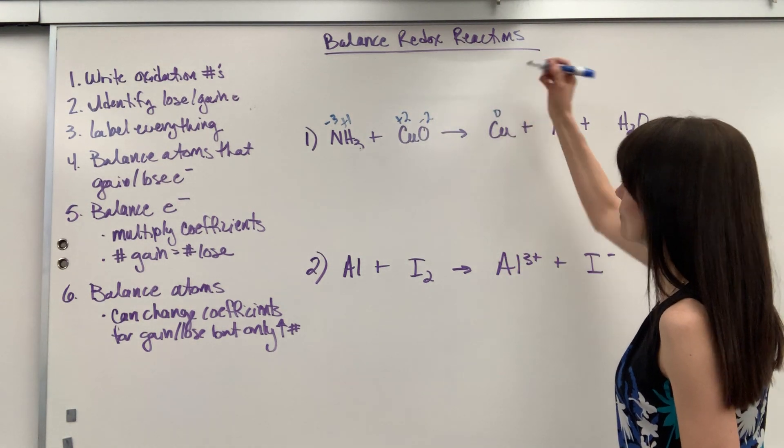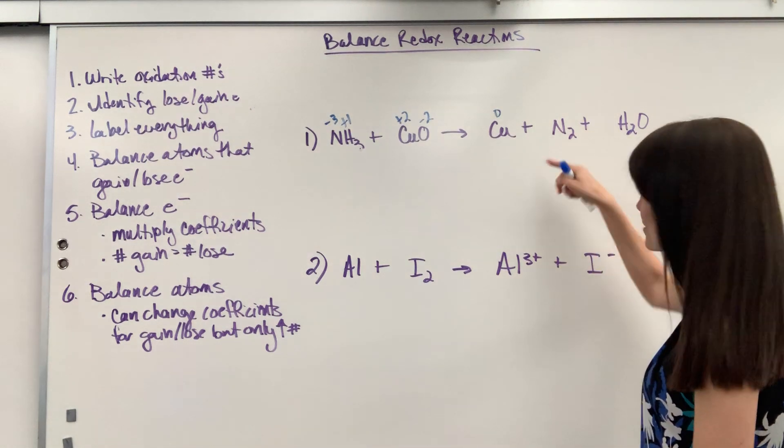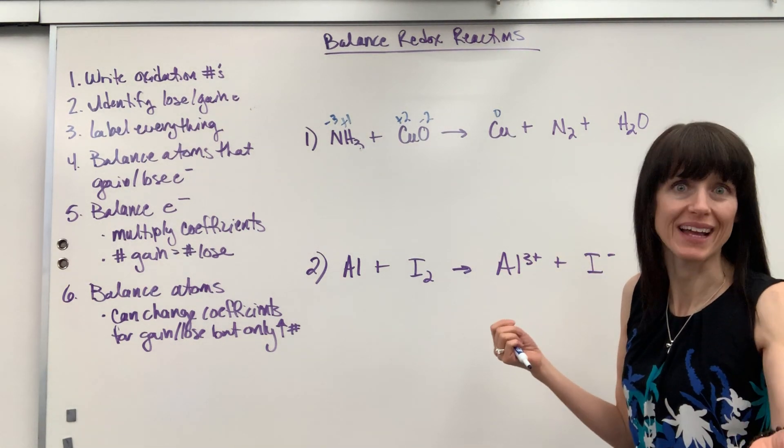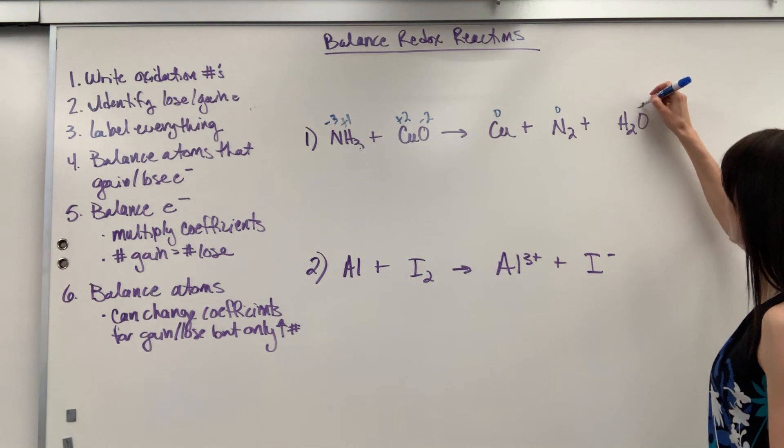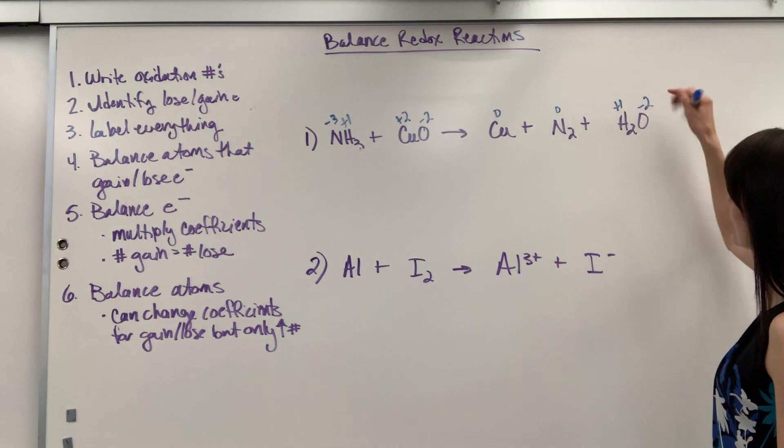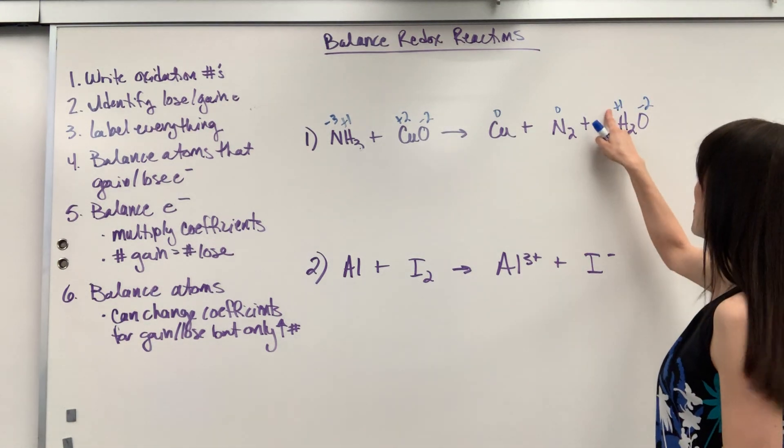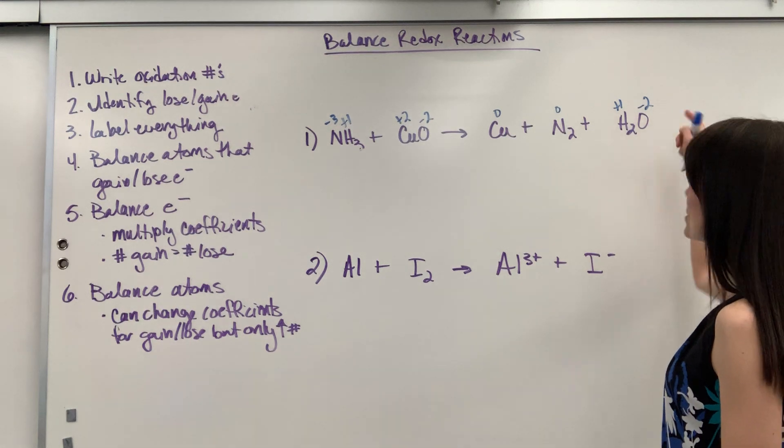Copper all by itself elemental form is zero. Nitrogen by itself elemental form which is diatomic is zero. Oxygen minus two, hydrogen is a plus one. Notice I've got two hydrogens. Plus one times two is plus two, minus two equals zero.